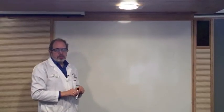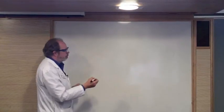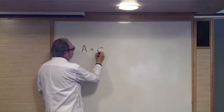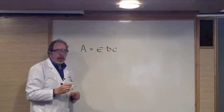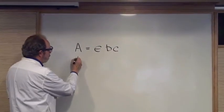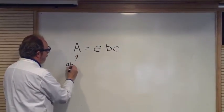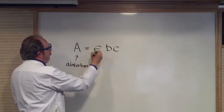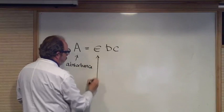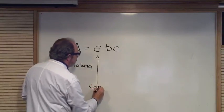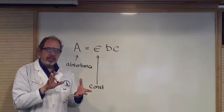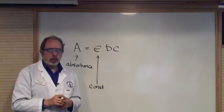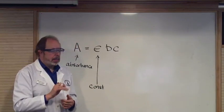Beer's Law covers absorbance of light by colored species. The statement of Beer's Law is very simple, A equals epsilon BC. A is the absorbance of the sample, that's how much light is absorbed. Epsilon is a constant and it's a function of the species that is absorbing and the wavelength of the light that is being used. Other than that, it doesn't change.